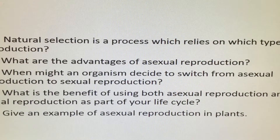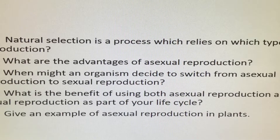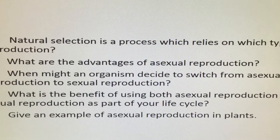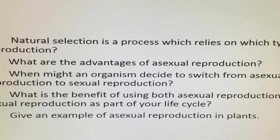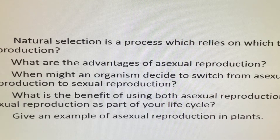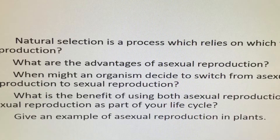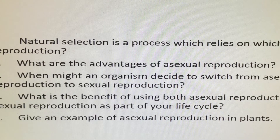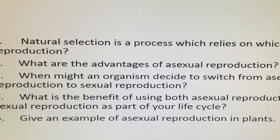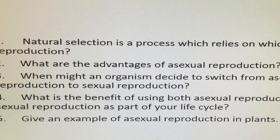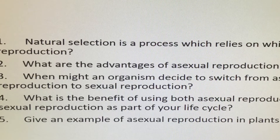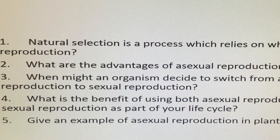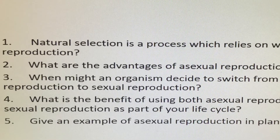Okay, so how well do you know this topic? Can you answer these questions? Pause the video and take a look. Natural selection is a process which relies on which type of reproduction? What are the advantages of asexual reproduction? When might an organism decide to switch from asexual reproduction to sexual reproduction? What is the benefit of using both asexual and sexual reproduction as part of your life cycle? And can you give an example of asexual reproduction in plants?